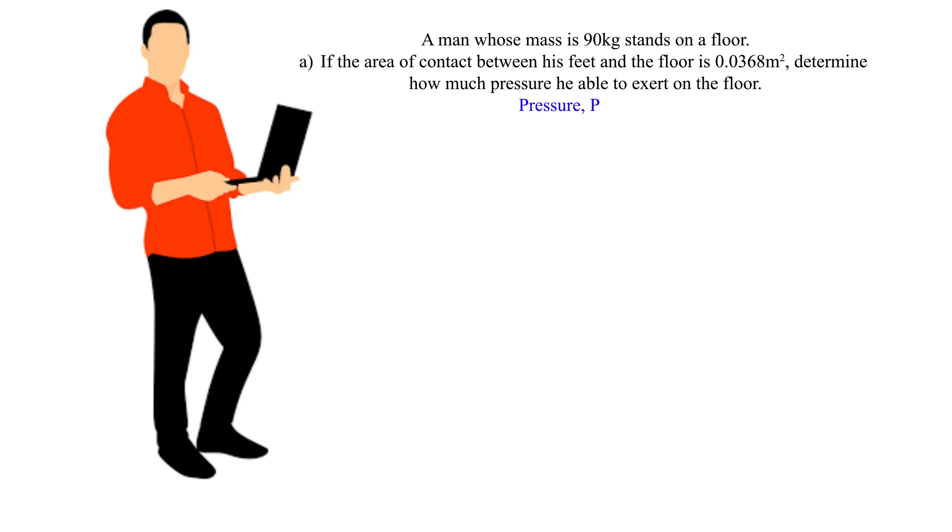Pressure, P = F/A = 900 newtons ÷ 0.0368 m² = 24,456.5217 newtons per meter square.